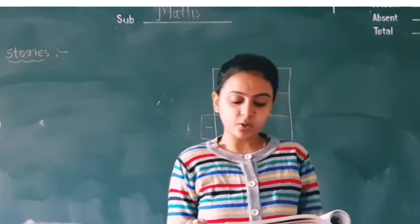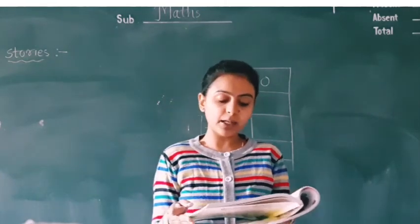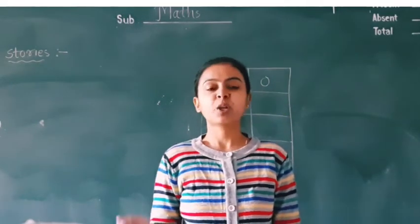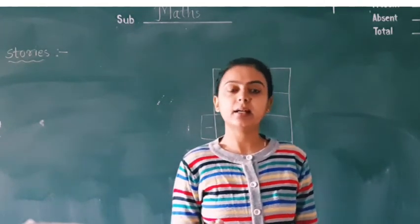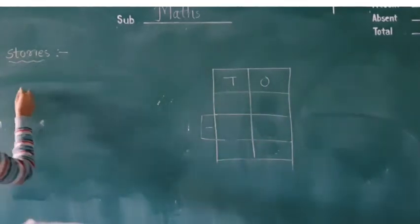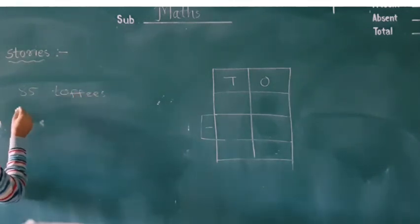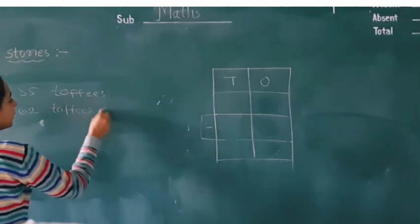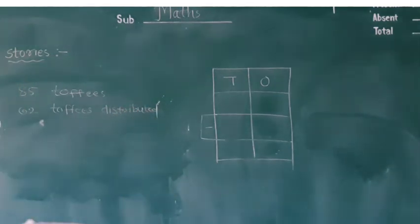Mahek brought 85 toffees on her birthday. She distributed 62 toffees. How many toffees are left with her? Mahek ke paas 85 toffees the uske birthday pe. Usne 62 toffees baat di, distribute ki. How many toffees are left?